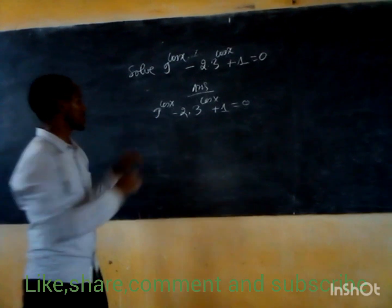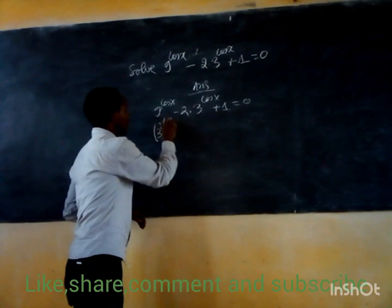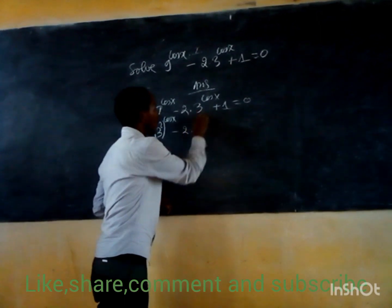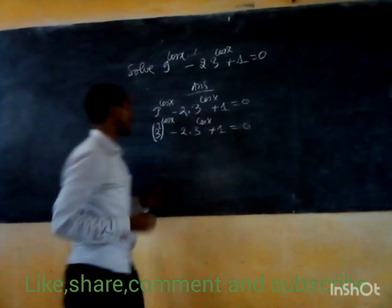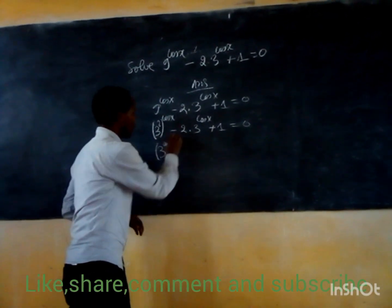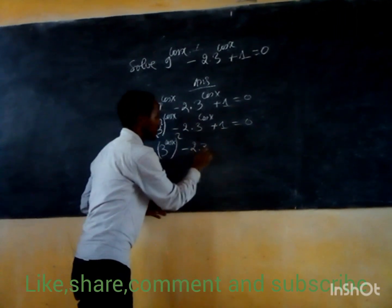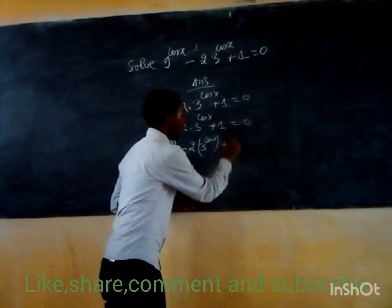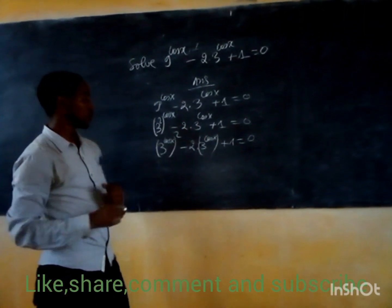To solve this, we note that 9 is equal to 3 squared. So we rewrite it as 3 to the power 2 times cosine of x minus 2, times 3 to the power cosine of x plus 1, equals 0. This is the exponential equation.